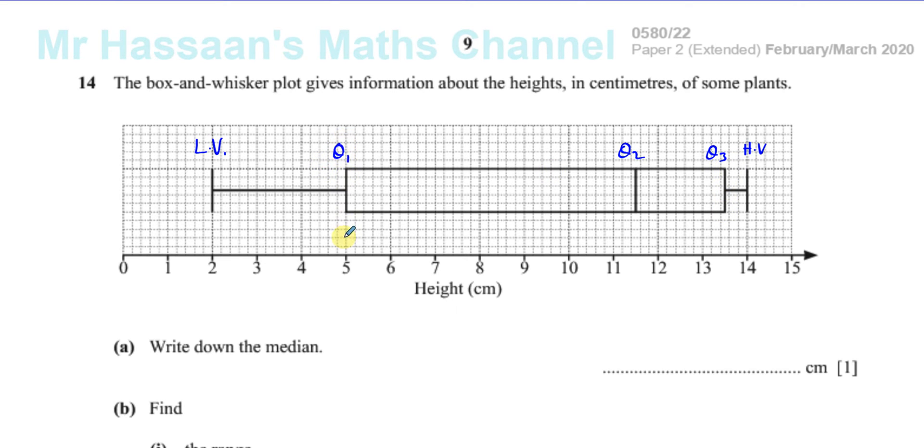So Q1, it's basically 25% of the plants are shorter than it. Q3, 75% of the plants are shorter than it. Q2, there's 50% of the plants are shorter than it and 50% of the plants are taller than it.